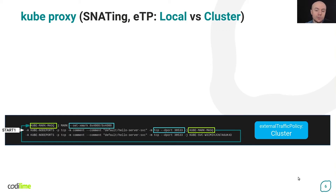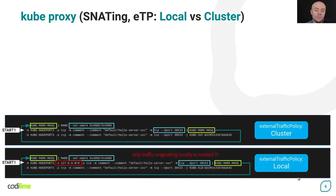There's a set of two rules for each such service. One of them contains a jump to a chain related to a given service instance. Note, however, that it is preceded by another rule that contains a jump to a chain named kube-mark-masq. Each packet going there is marked using a special mechanism available in the IP tables system. When external traffic policy is set to local, the same happens with one important difference: only locally generated requests to services go to the kube-mark-masq chain. All others don't and are therefore not marked.